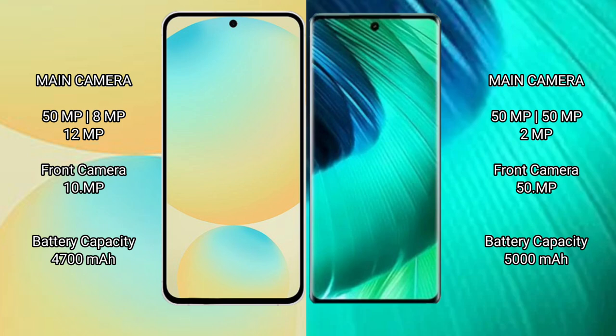Vov30 has a 15MP front camera. Samsung Galaxy S24 FE has a 4600mAh battery with 25W fast charging support. Vov30 has a 5000mAh battery with 80W fast charging support.